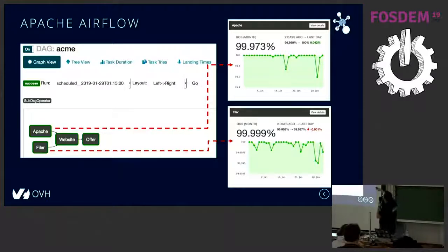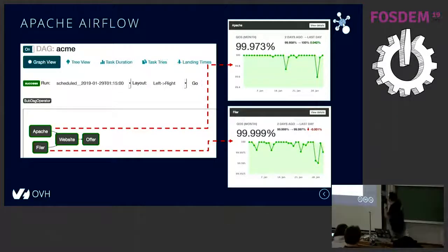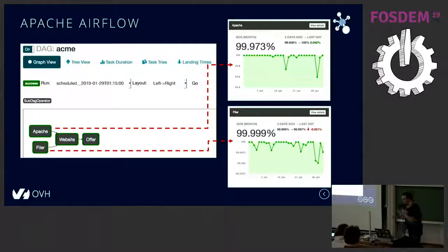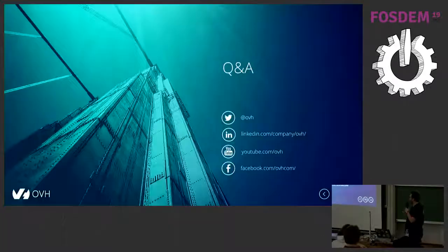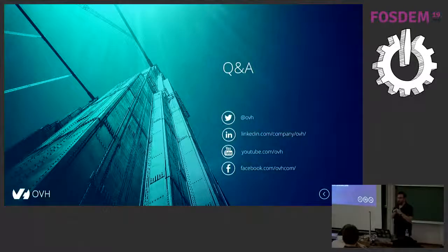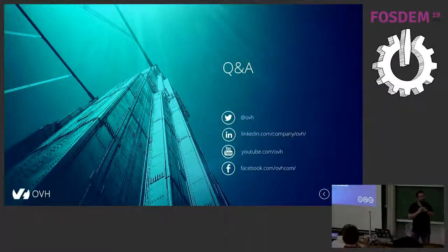Here is the result of the Depsy interface displaying the QoS — the evolution of the QoS of the Filer, Apache, and others. We are done with Depsy. If you have any questions, we'll answer them with pleasure. Thank you.